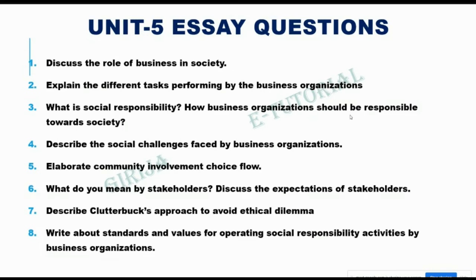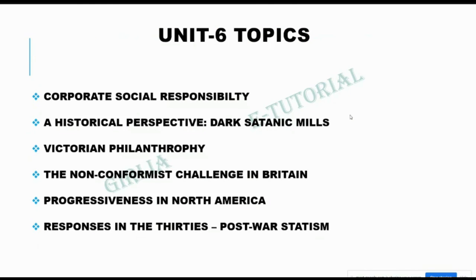Important questions in Unit five. Question number one: Discuss the role of business in society. Question number two: Explain the different tasks performed by business organizations. Question number three: What is social responsibility? How should business organizations be responsible towards society? Question number four: Describe the social challenges faced by business organizations. Question number five: Elaborate community involvement choice flow. Question number six: What do you mean by stakeholders? Discuss the expectations of stakeholders. Question number seven: Describe Clutterbuck's approach to avoid ethical dilemma. Question number eight: Write about standards and values for operating social responsibility activities by business organizations.